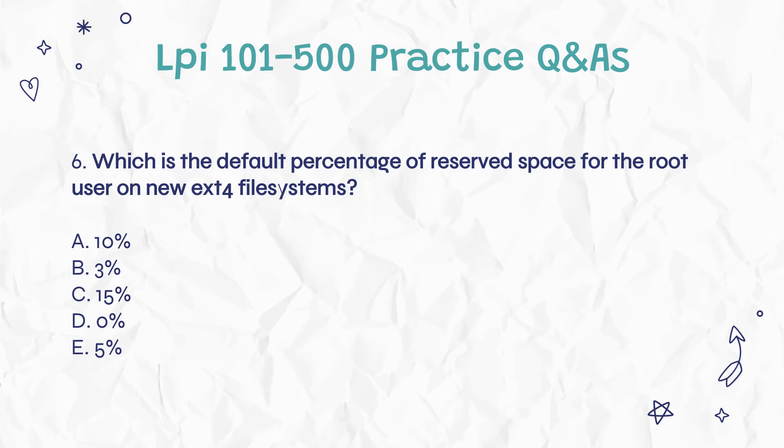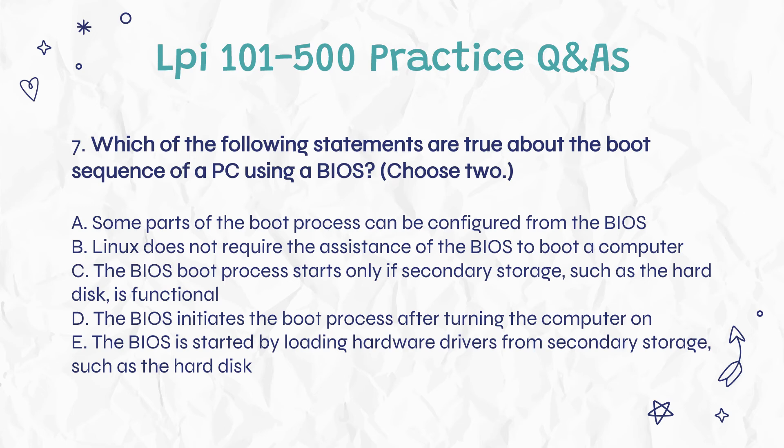Question 6: Which is the default percentage of reserved space for the root user on new ext4 file systems? a. 10%. b. 3%. c. 15%. d. 0%. e. 5%.